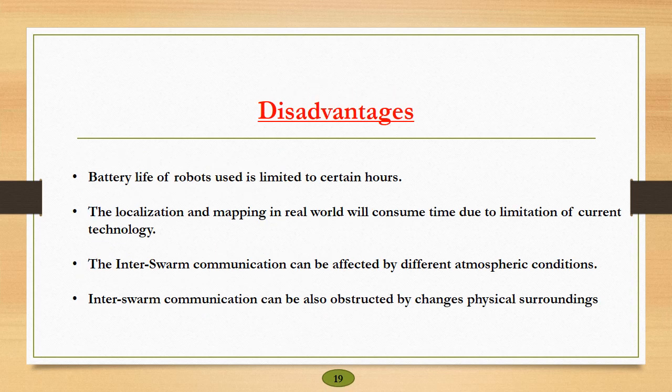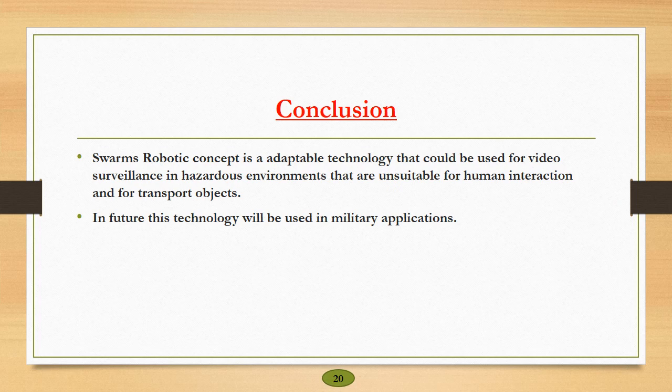These are the main disadvantages of a swarm robotic system. The first one is battery life, so the battery life of these robots are limited to certain hours, so certain measures should be taken to improve the battery life like wireless power transmissions. Other limitation is the problem of SLAM, that is simultaneous localization and mapping in real world, will consume time due to the limitation of the current technology. And the inter-swarm communication can also be affected by atmospheric as well as physical conditions.